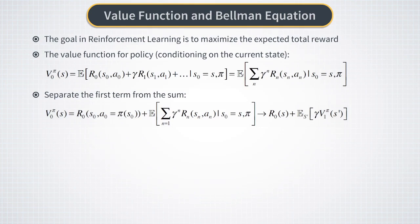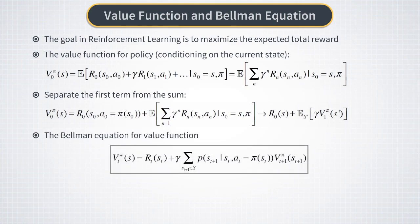We can now replace the expectation sign in this term by an explicit sum that involves probabilities of transitions to all possible next states from the current state. This produces a recursive relation for the value function called the Bellman equation. It was proposed in the 1950s by Richard Bellman in the context of his pioneering work on dynamic programming.